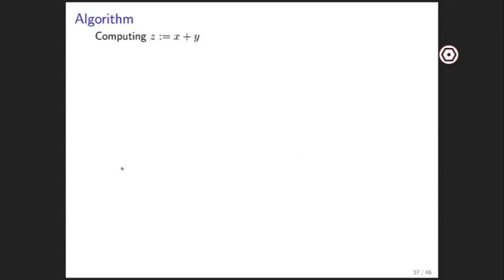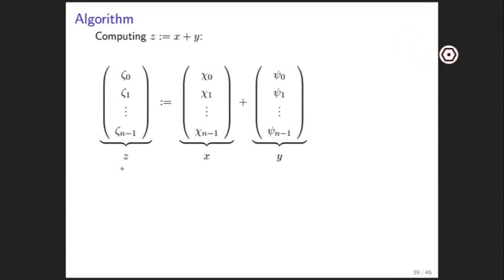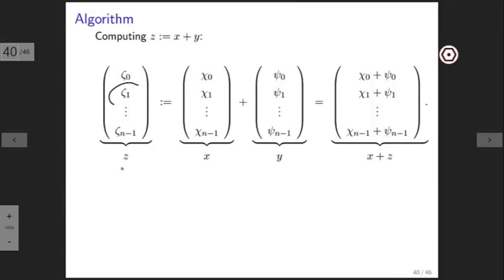Now what if we want an algorithm that computes z becomes x plus y? We can take z and view it as its components, do the same for x and y, and then any particular component of z, say zeta 1, just becomes chi 1 plus psi 1.